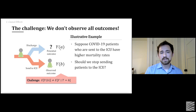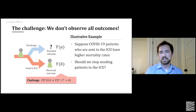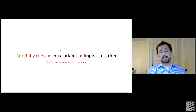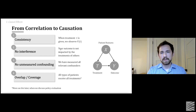In more formal notation, we might write that as: the expectation of the potential outcome is not equal to the expectation of the outcome we observe given that we condition on the patient population that receives treatment. Everyone now understands that correlation does not imply causation — but today we're going a bit beyond that. I'll talk about how carefully chosen correlations can imply causation and the types of assumptions we need to make to get there.